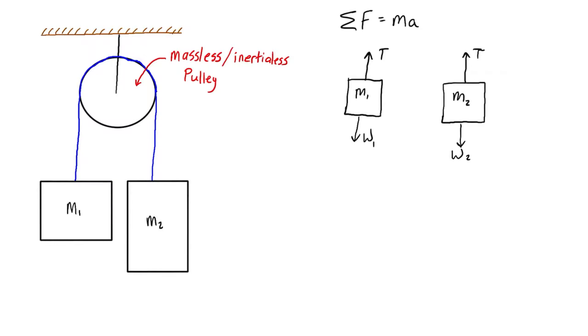Similar to the last video, we identify the direction of acceleration as the positive direction for each mass. If mass 1 is 10 kilograms and mass 2 is 15 kilograms, then mass 1 will be raised up and mass 2 will be lowered down. So mass 1 acceleration is going up and mass 2 acceleration is going down.